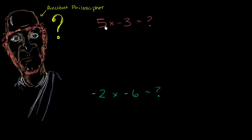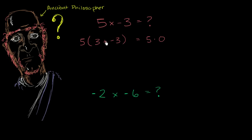To make this consistent with the rest of the mathematics you know, you go into a thought experiment. What should 5 times (3 plus negative 3) be? Well, you already know that negative 3 is the opposite of 3. If you add 3 to negative 3, you get 0. So this equals 5 times 0, and anything times 0 is going to be 0. So this expression right over here should be 0.